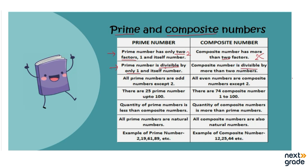For example, if I take the number three and I want to divide it, then I have two factors. Either I divide three by three — three divided by three is one — or I divide it by one — one times three is three. So how many factors do prime numbers have? Only two.